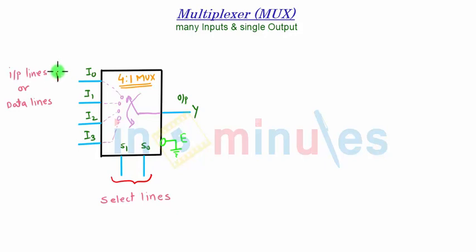Let's say D0, D1, D2 and D3, these are 4 data lines which are connected directly to the inputs. Depending upon the select lines, one of D0, D1, D2, D3 will be directly connected to the output Y through the switch.